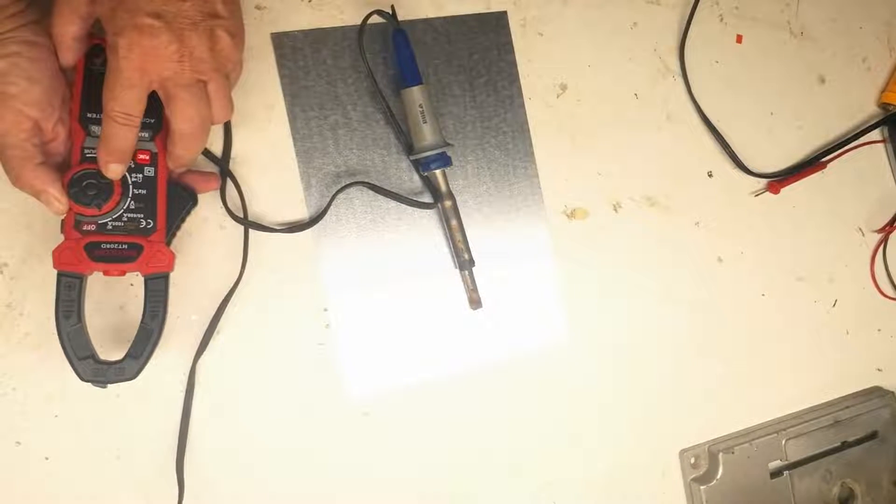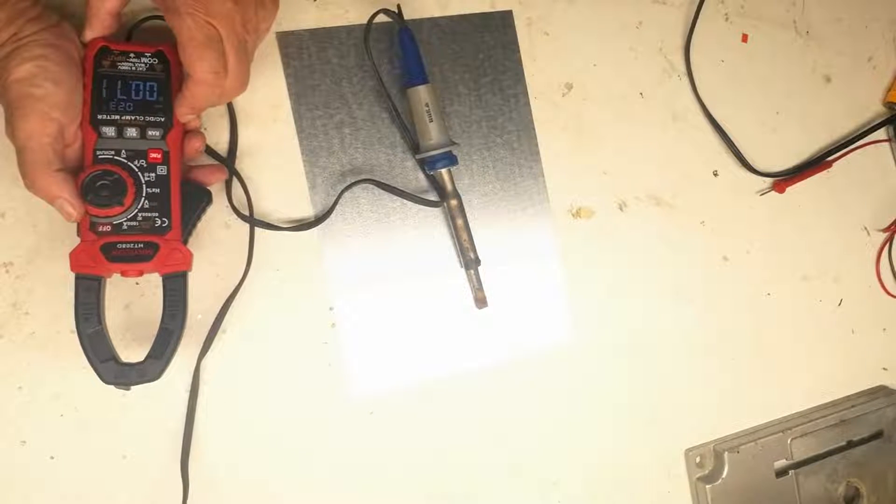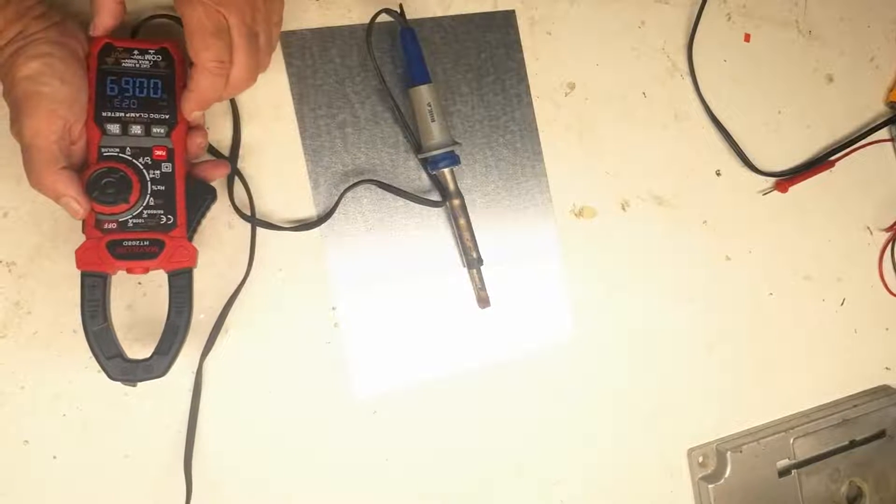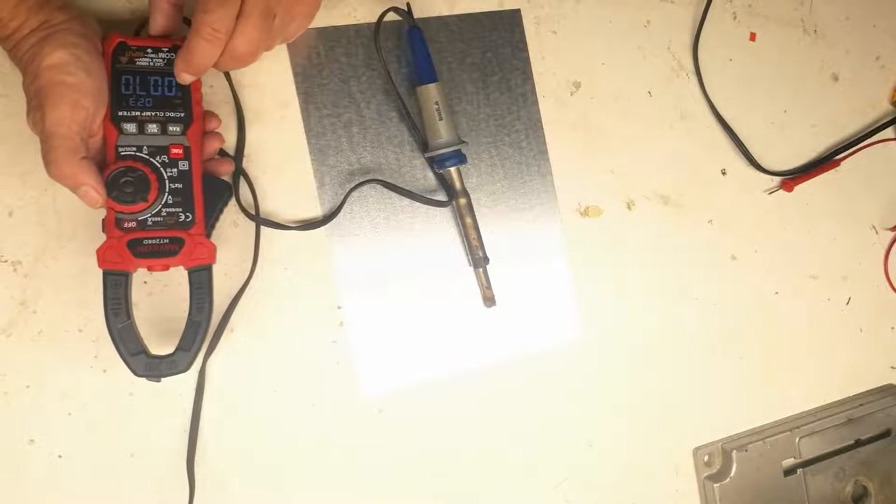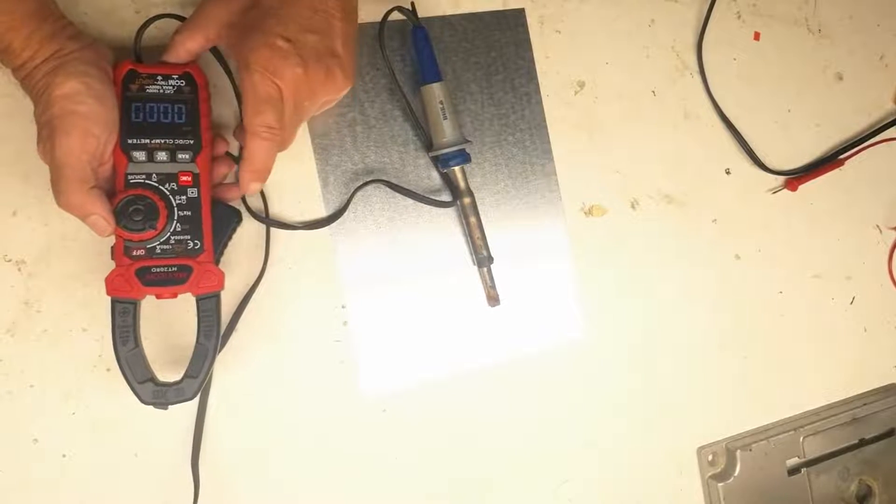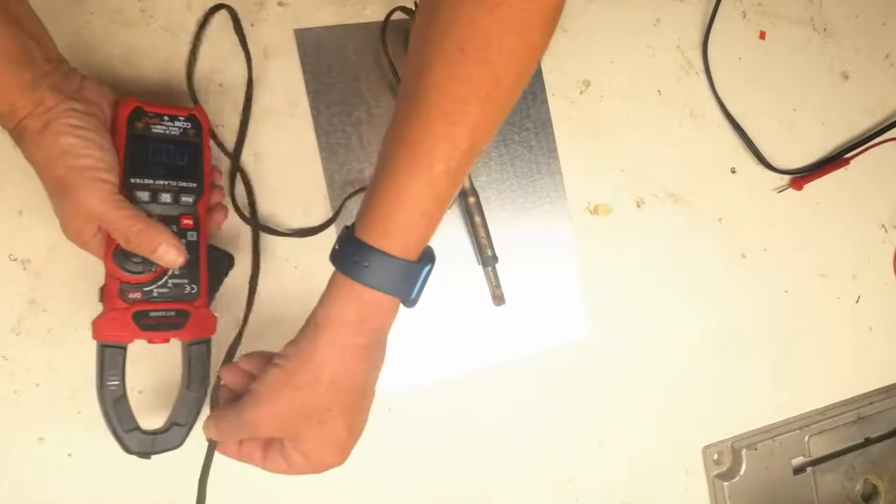I'm going to put it on the 60 to 600 amp range. It'll go clear up to a thousand amps. That's for somebody working with a lot more power than me. It comes up on DC, so pushing the function button, it goes to AC, and right now there's zero amps.